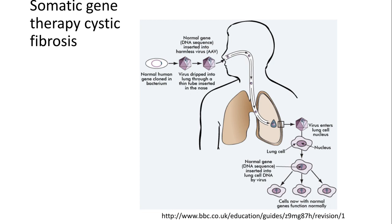Cystic fibrosis is a genetic disorder by which the individual will produce too much mucus and it's hard to clear all that mucus. As you can see here, we have a virus and this virus is used as a vector. This virus will have inserted into it, using genetic manipulation and genetic engineering, the healthy gene that these cells lining the lungs need.